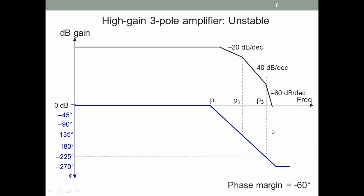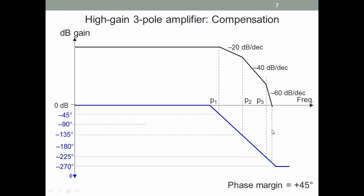What does dominant pole compensation do? We need to modify this Bode plot. If we want a 45 degree phase margin, the second pole must be at the unity gain frequency. That means for frequencies between P1 and P2, the gain will have a slope of 20 dB per decade. So we draw a line at 20 dB per decade starting with P2 at the unity gain frequency. We make P2 the unity gain frequency — what does that do to P1? This has to be 20 dB per decade, so P1 has to move to a lower frequency: the modified P1.